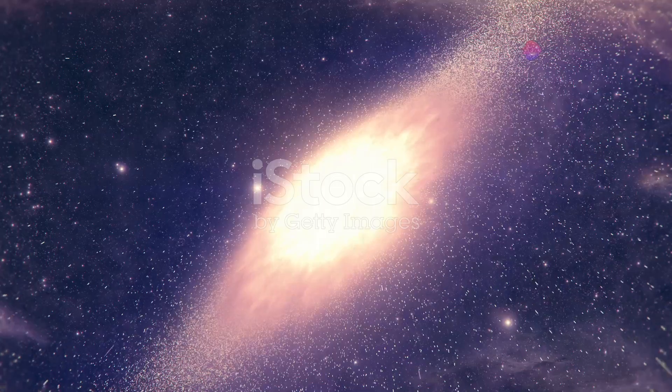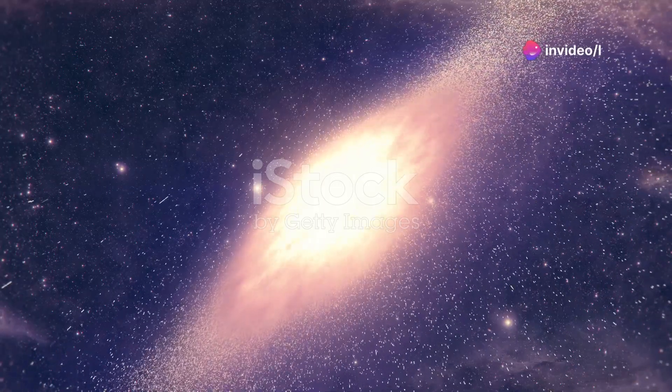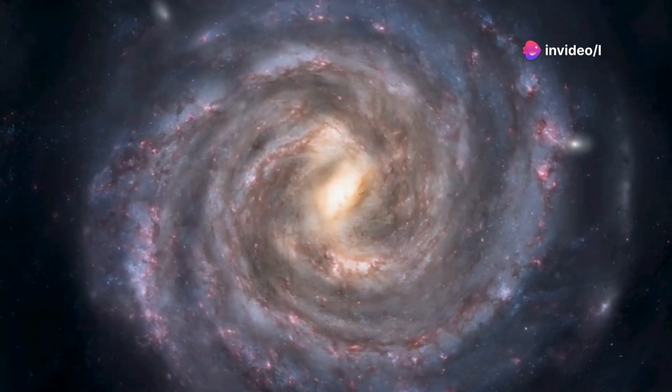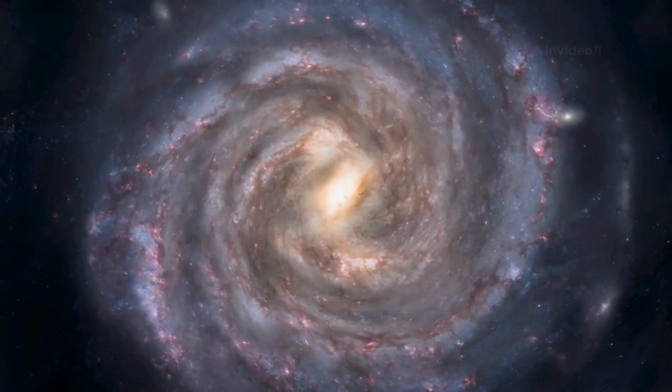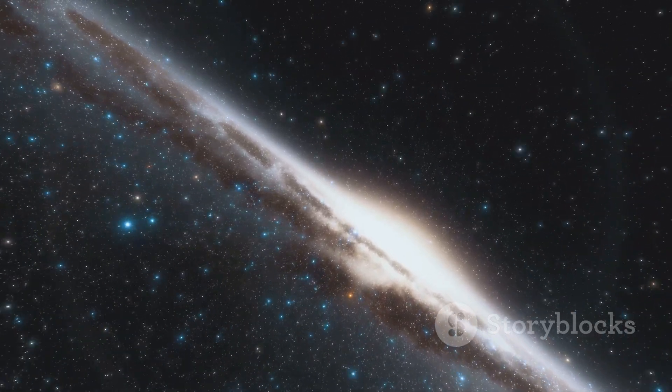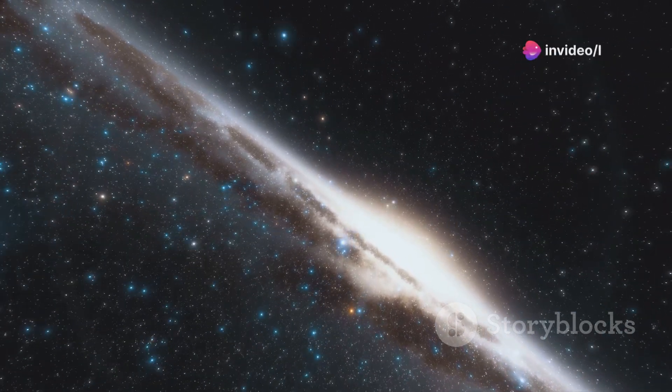Galaxies are not all created equal. They come in a variety of shapes, sizes, and compositions. Some galaxies, like our own Milky Way, exhibit a majestic spiral structure. These spiral galaxies are characterized by their central bulge and graceful spiral arms, where new stars are born.